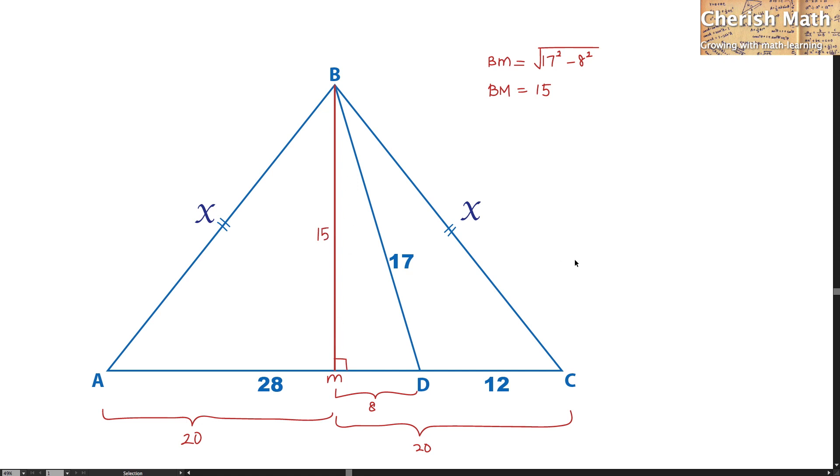In the next step, by referring to the triangle BMC, it is a right angle. Now I'm going to apply the Pythagorean theorem again to solve for the value of x, and that is the square root of 15 squared plus 20 squared. The value that I'm getting here is 25 for x.